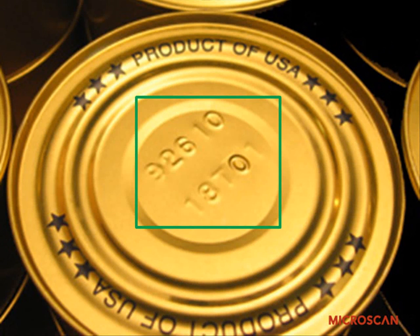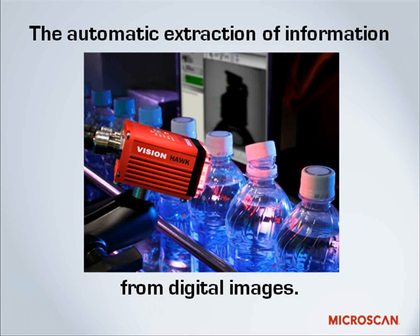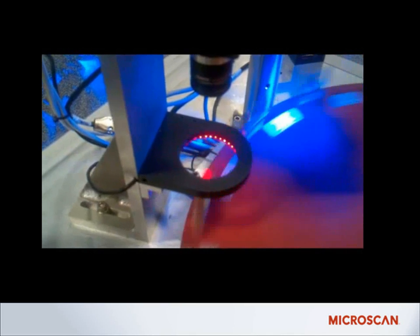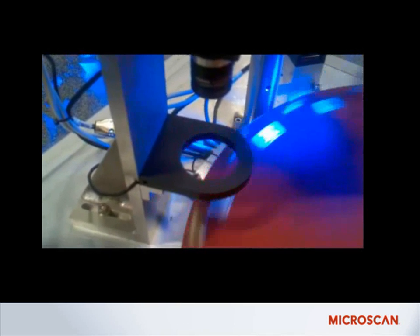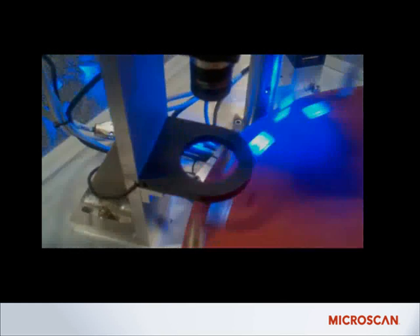Let's review. Machine vision is the automatic extraction of information from digital images. The common manufacturing applications of machine vision generally fall under four basic functions: Measurement, Counting, Location, and Decoding. The visual examples shown here are mostly slowed down so you can see what's happening. In reality, machine vision can operate much faster, processing hundreds — or in some cases even thousands — of pieces per minute.